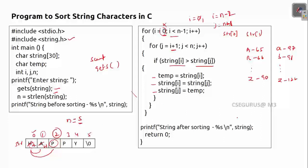After all rearrangements, you get the sorted string. This sorting method is not selection sort — that requires finding the minimum first — and it's not bubble sort, which requires adjacent swaps. This is another method of sorting, but its complexity is still O(n²) because of the two nested for loops, traversing approximately n times n.